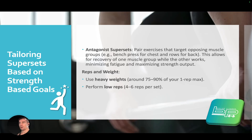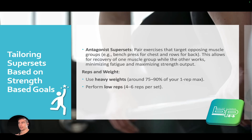Your one rep max is basically the maximum weight you can lift for one repetition, and you want to work at around 75% to 90% of that. A lot of my own personal training aligns with this — I focus on lower reps with heavier weights. So if your focus is strength-based goals, this is a good superset structure to follow.